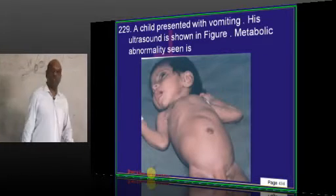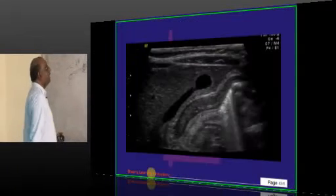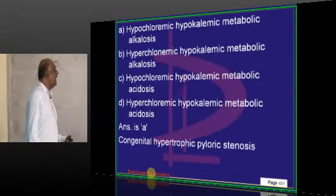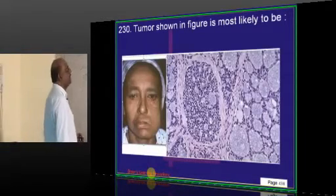A child is having ultrasound which is showing the typical appearance of the hypertrophic pyloric stenosis. And what is the metabolic abnormality that you see in this? Hypochloremic, hypokalemic metabolic alkalosis is what you need to remember.